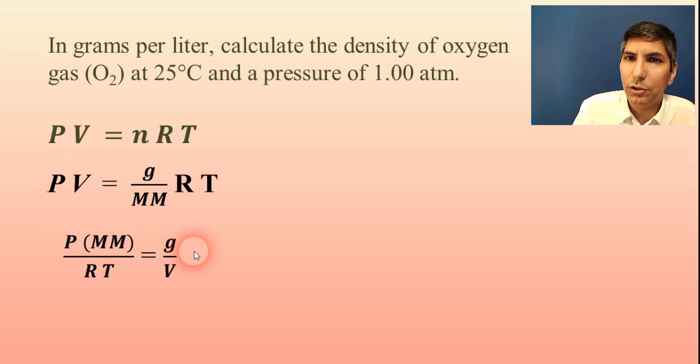This is just a simple algebraic reorganization of that equation. So G over V, grams divided by liters, equals pressure times the molar mass divided by RT. I've just rearranged the equation.